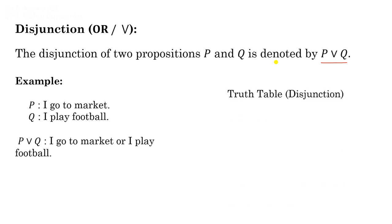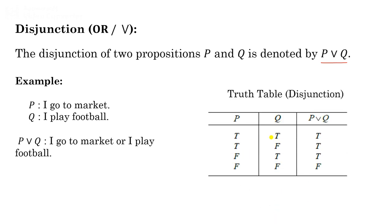The four combinations for the truth table of disjunction are: true-true, true-false, false-true, and false-false. Whenever at least one of the two propositions is true, p ∨ q is true — that covers the first three cases. Only in the last case, when both propositions are false, is p ∨ q false. So p ∨ q is true when either p, or q, or both are true. This is the truth table for disjunction.